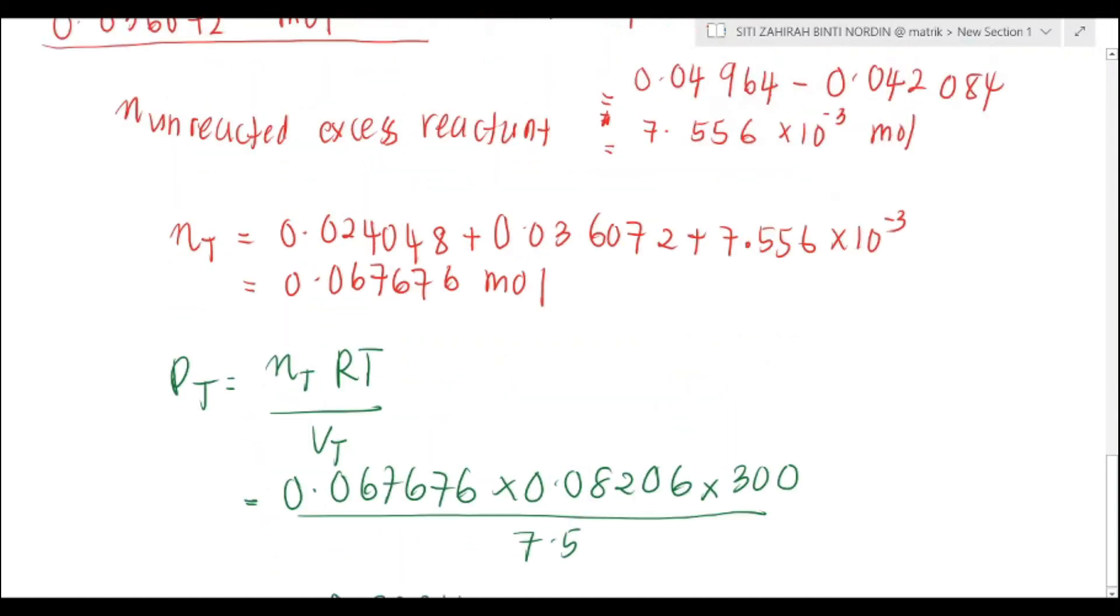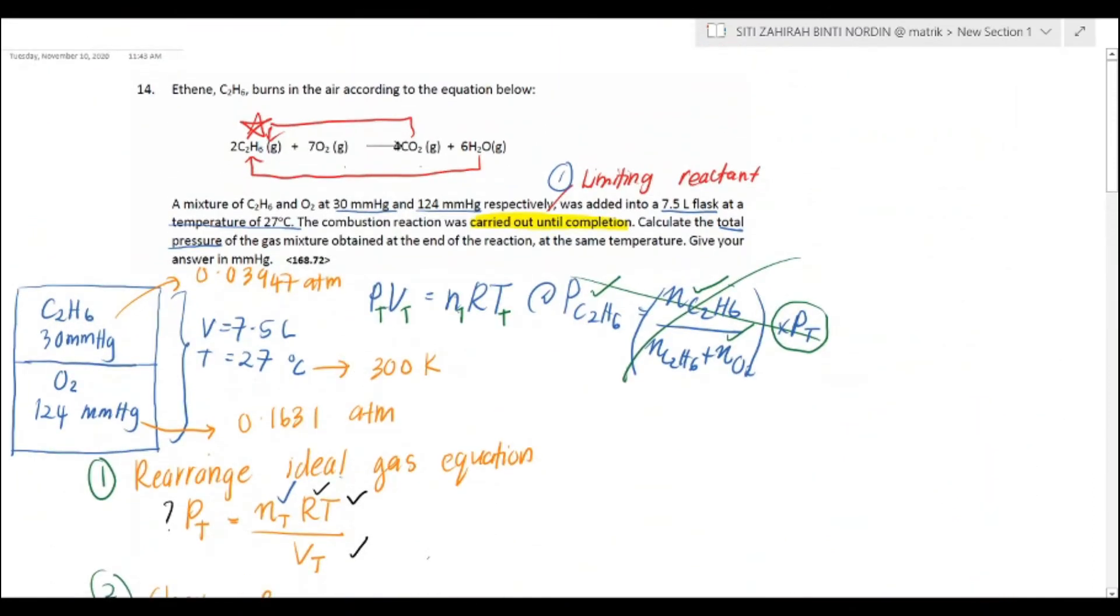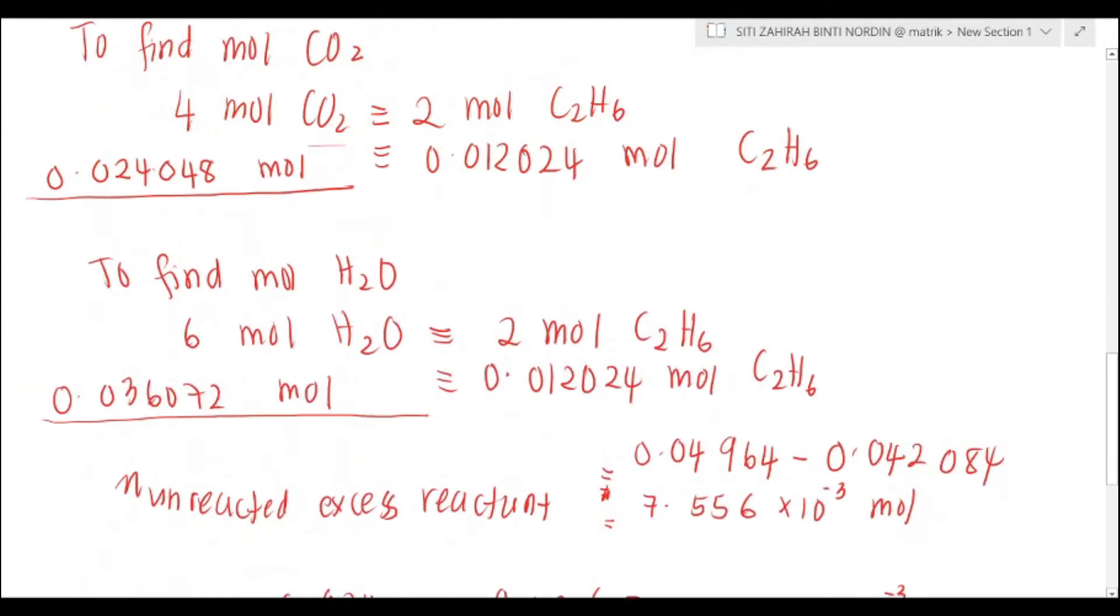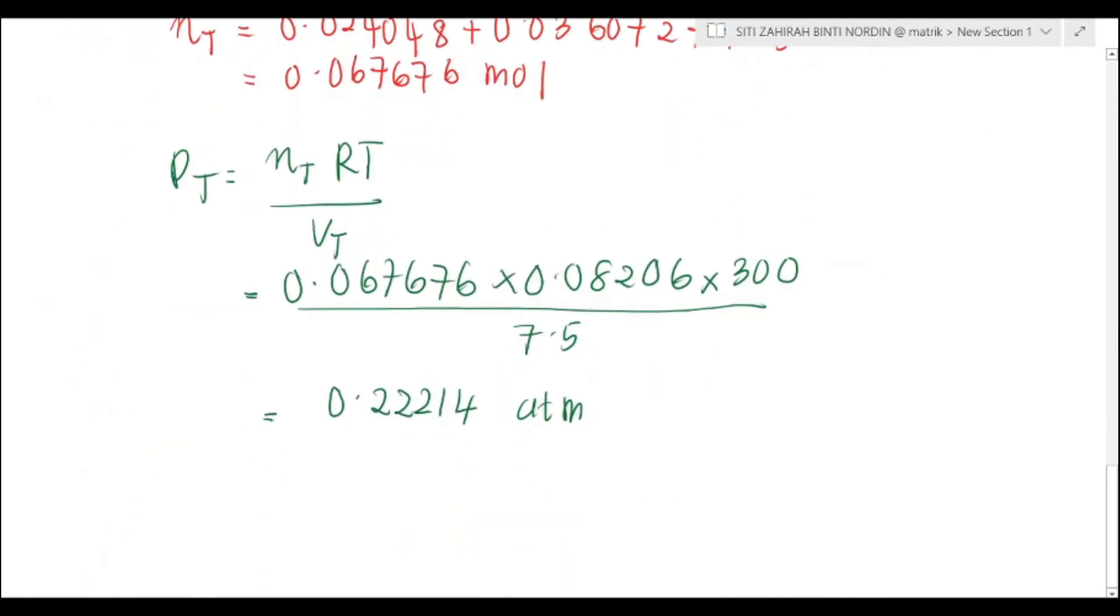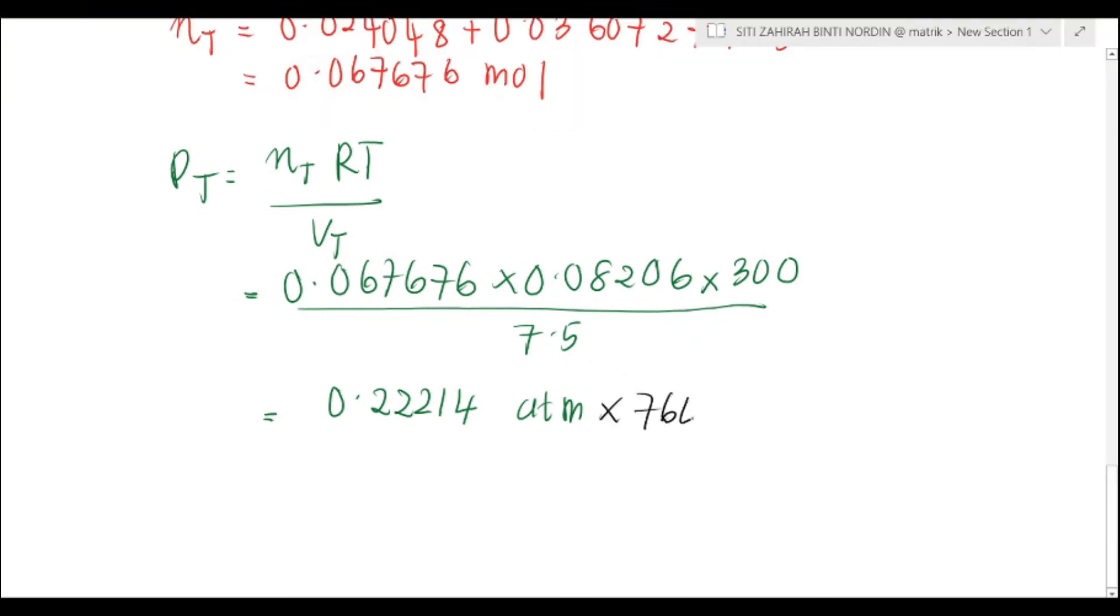Class, please look back at the question. They want the answer in millimeter mercury. Since we are using ideal gas equation, our pressure would be in atm. So just times it with 760 millimeter mercury. You've got your final answer as 168.83 millimeter mercury.